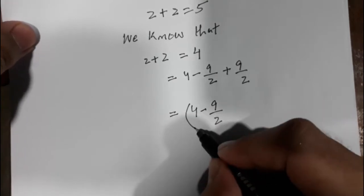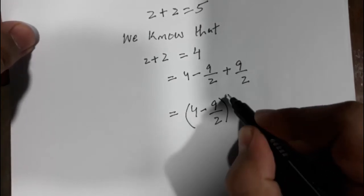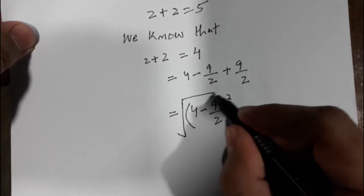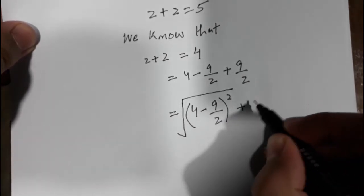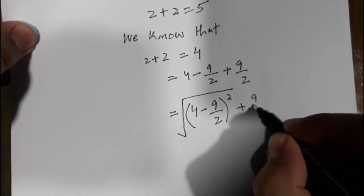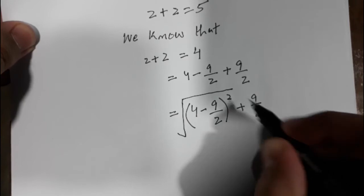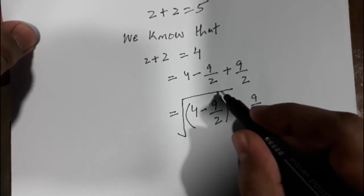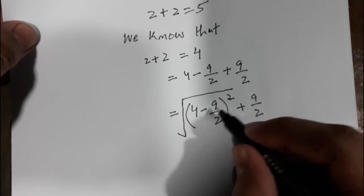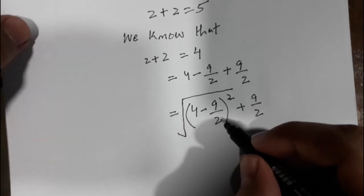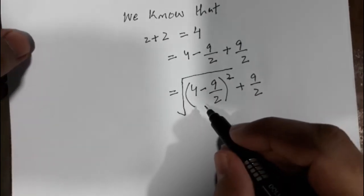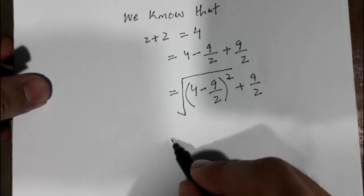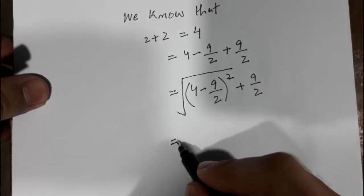This is the whole square under square root, plus 9 divided by 2. If you cancel this square with the square root, it would be again 4 minus 9 divided by 2. So it is the formula a squared minus b squared, so open this formula.